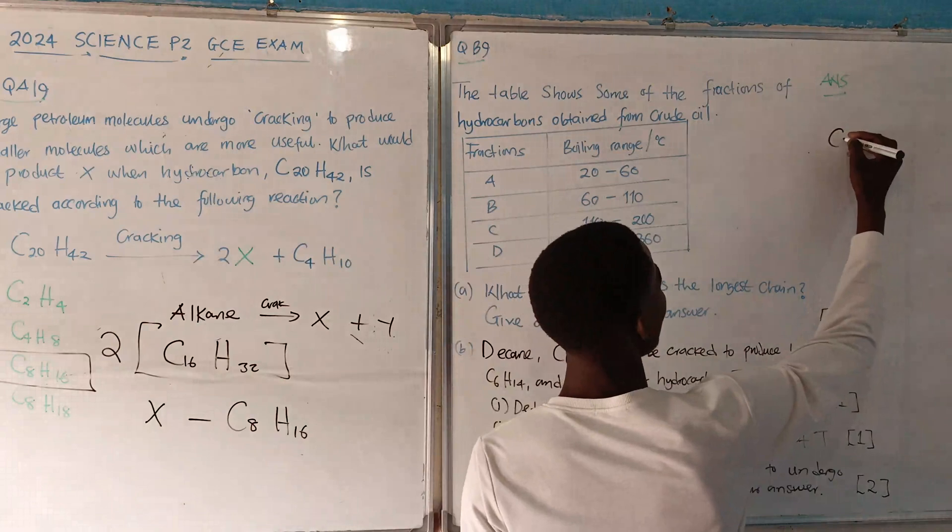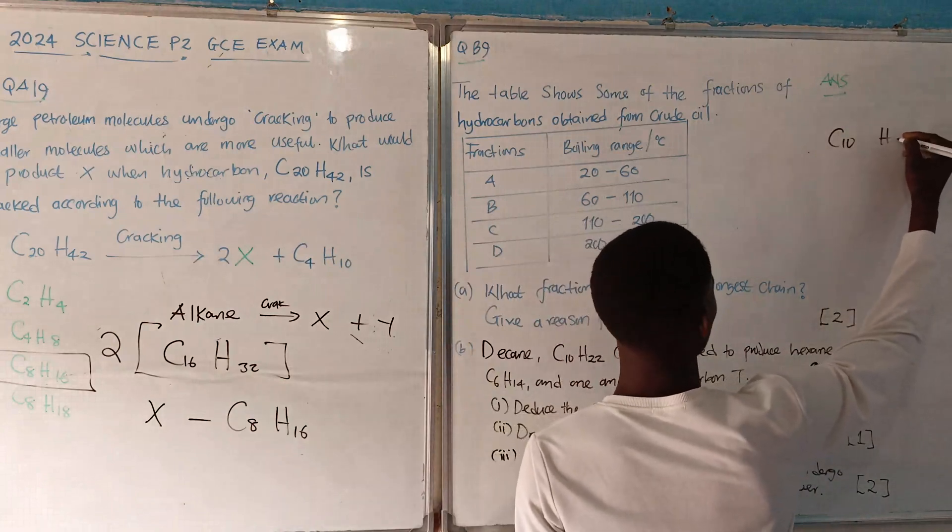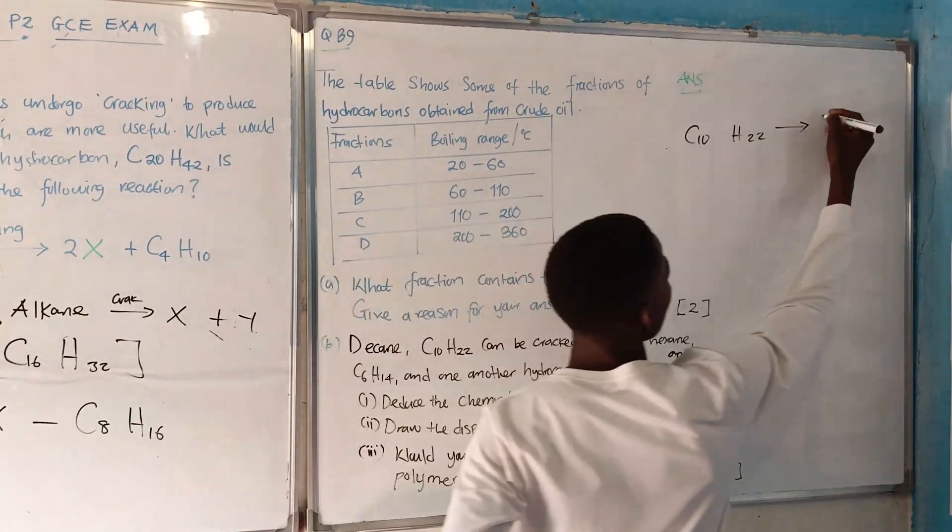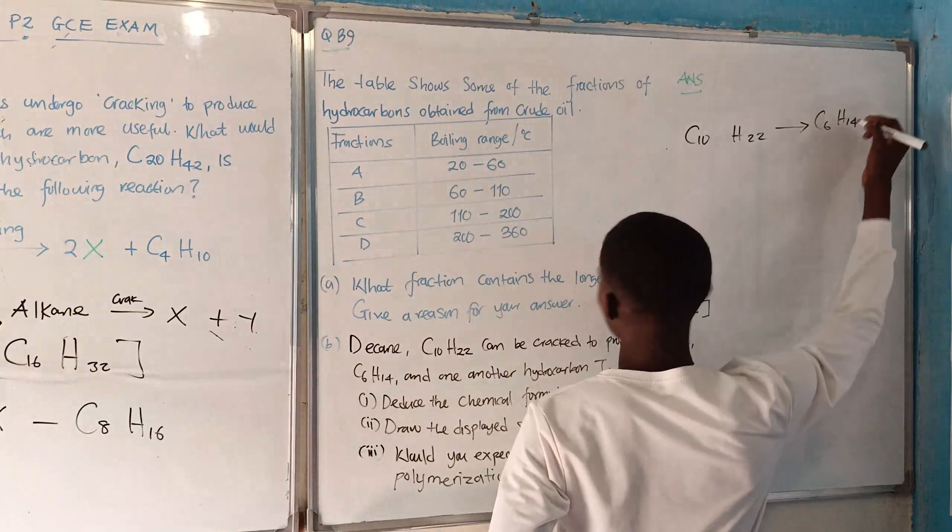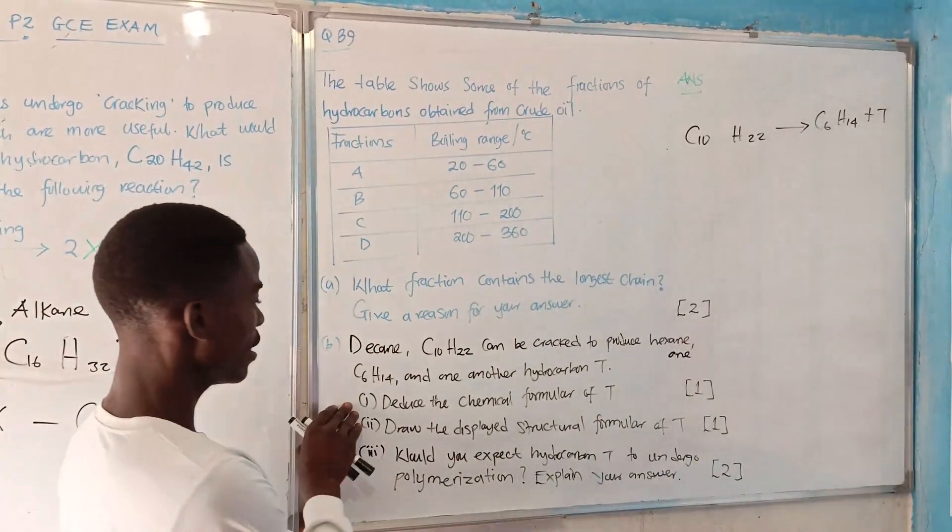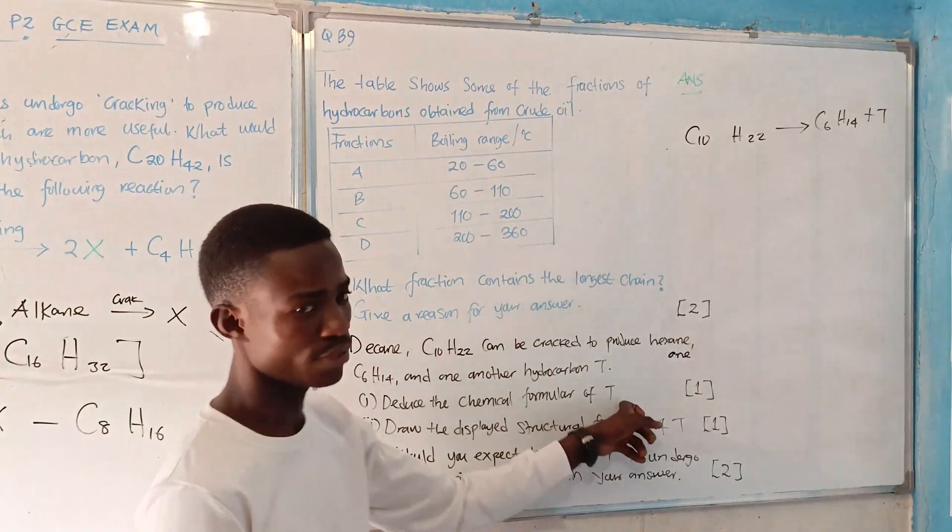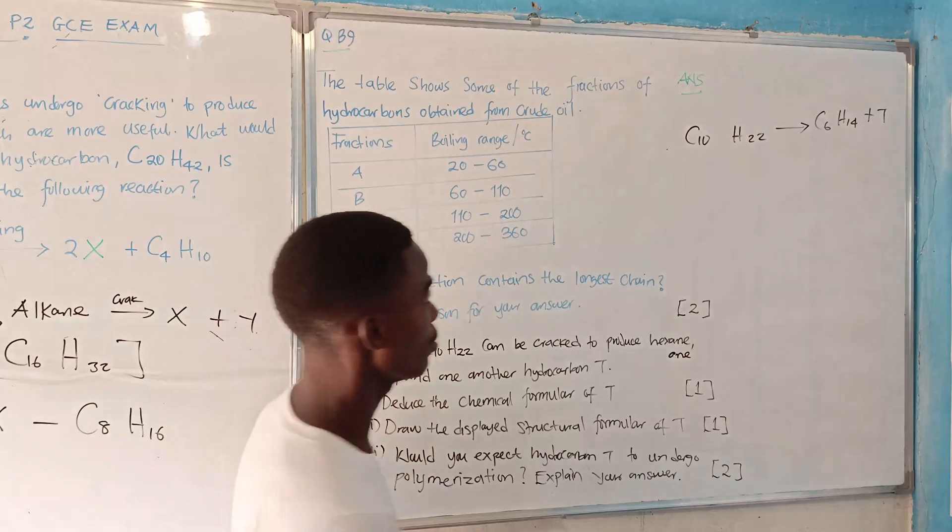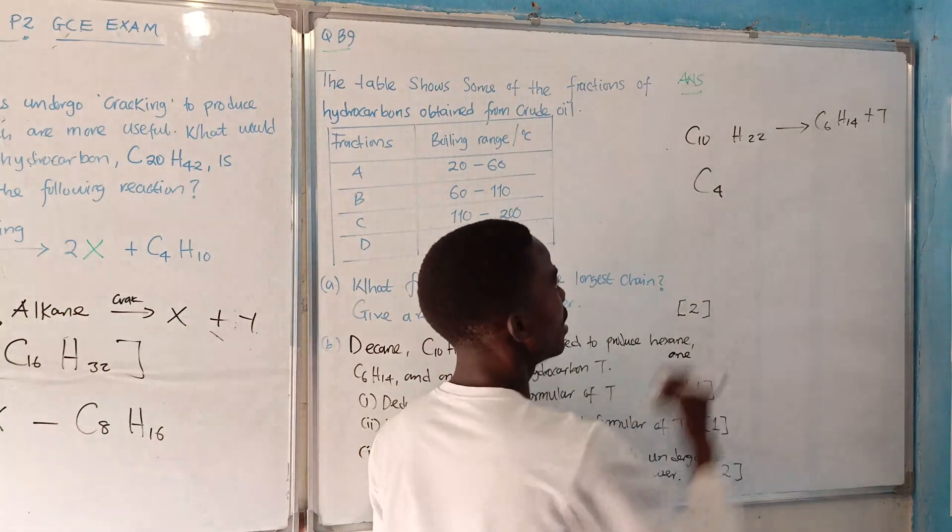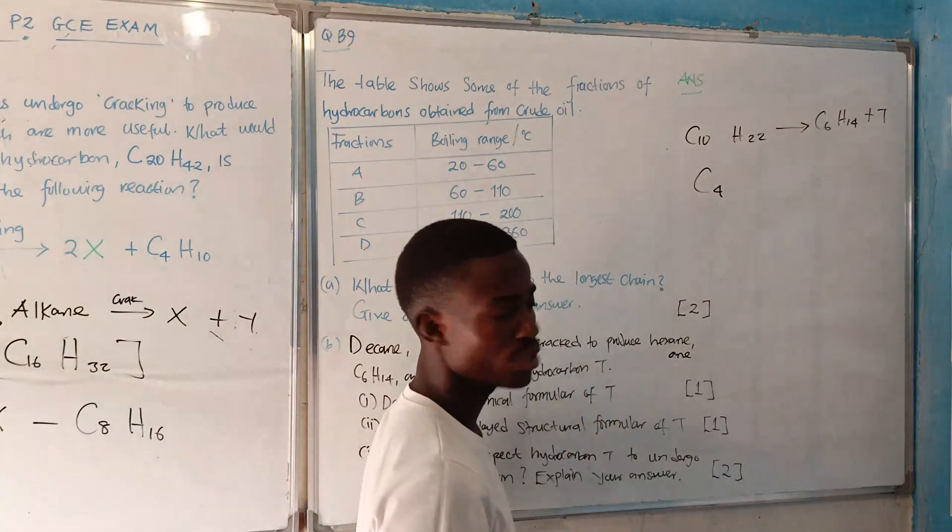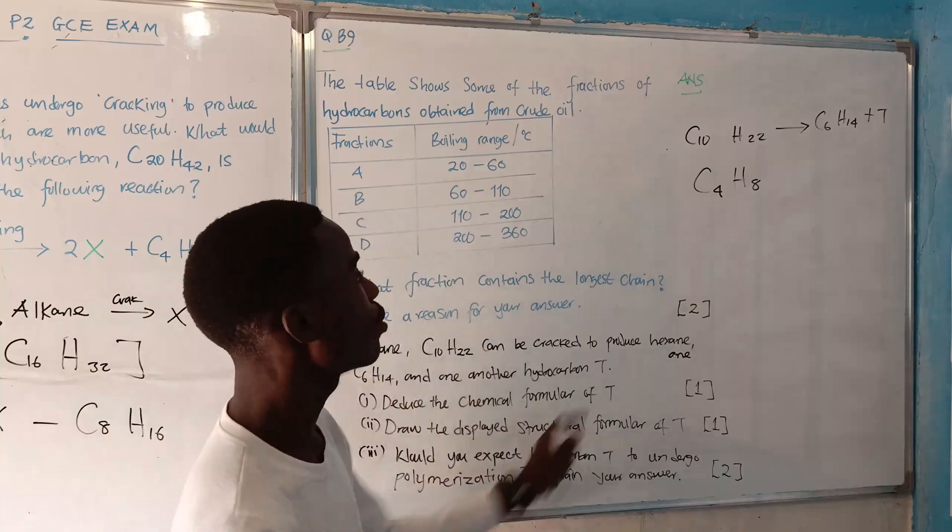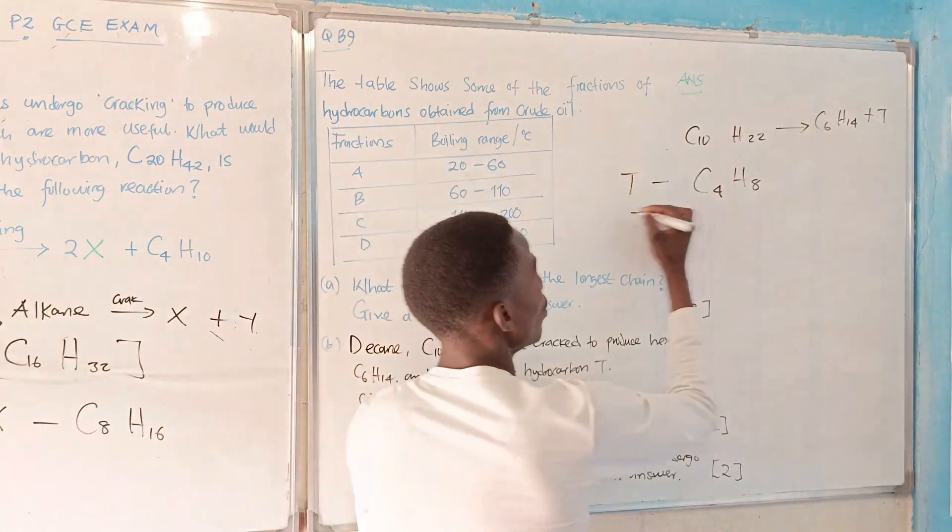We have C10H22 cracking to give C6H14. To deduce the chemical formula of T, all we are trying to do is to subtract 6 from 10. Meaning that, we are going to have 4 carbons. Then, 14 from 22, we are going to have 8 hydrogens. So, this is the chemical formula of T: C4H8.